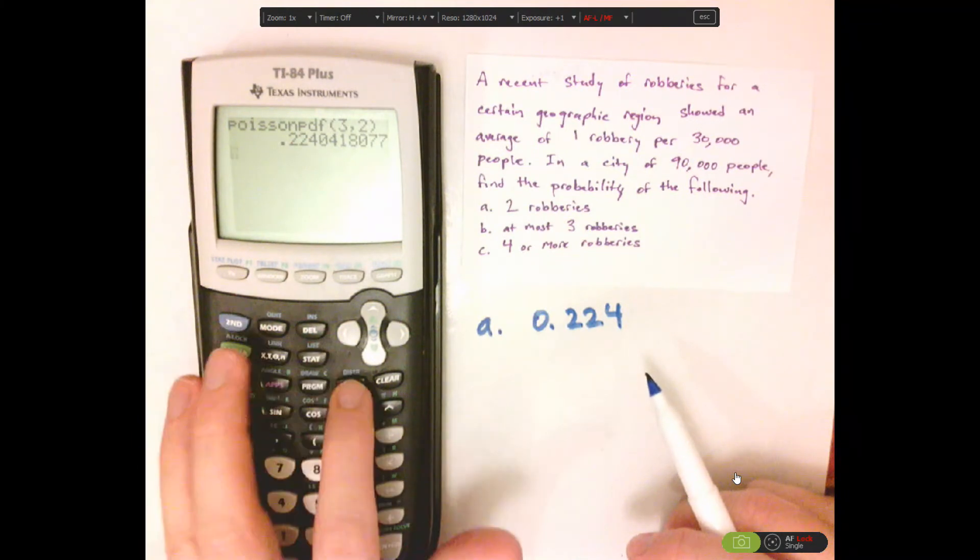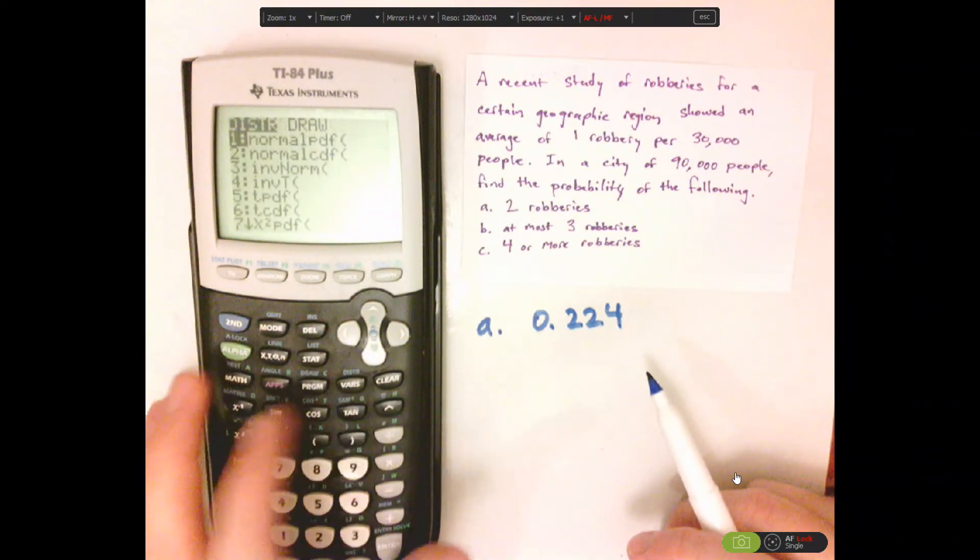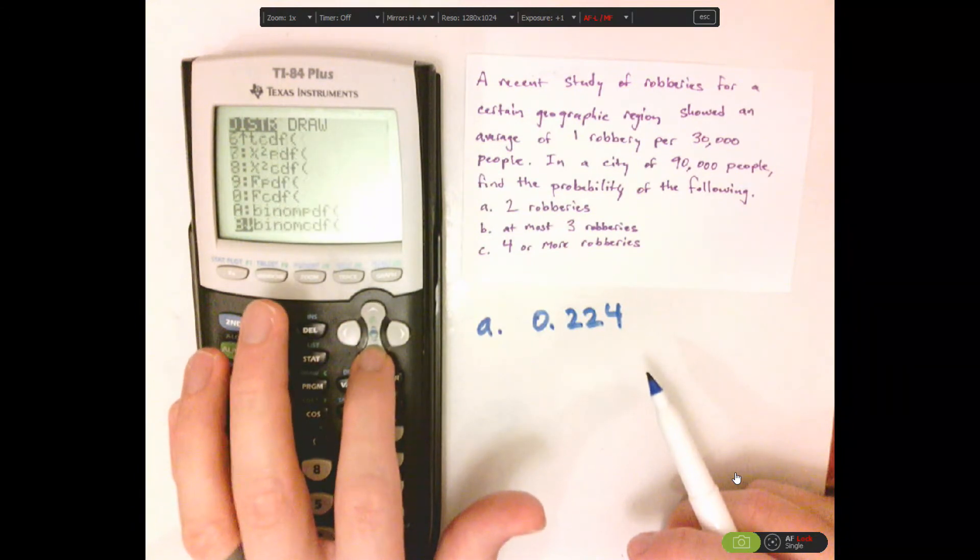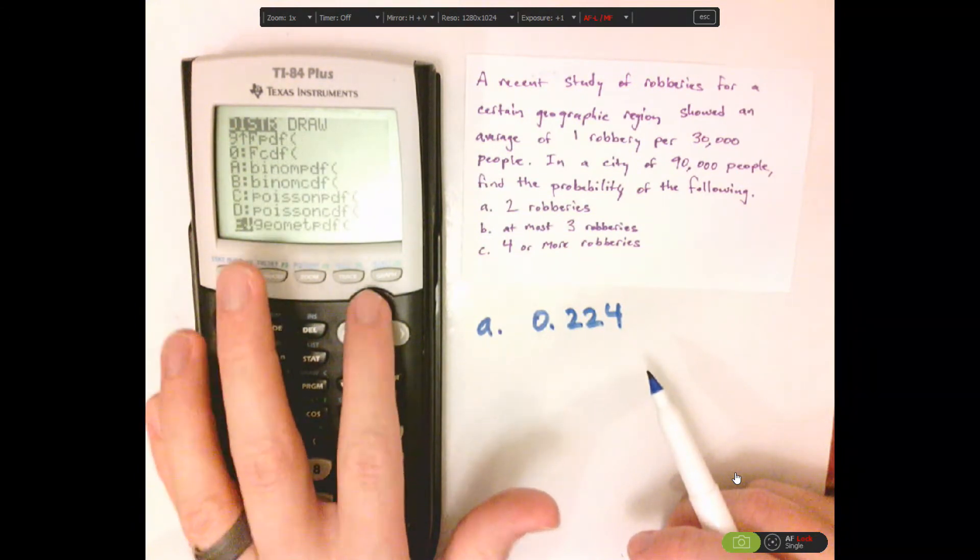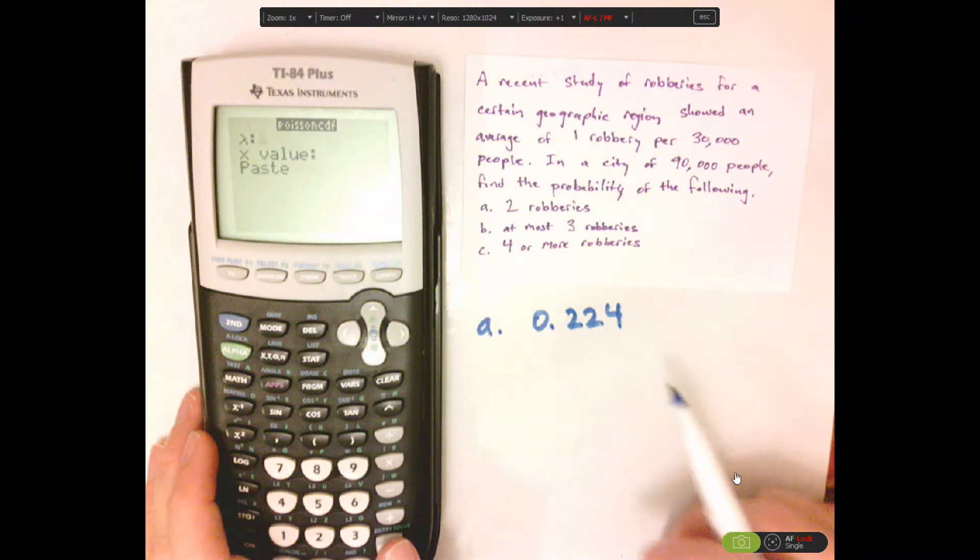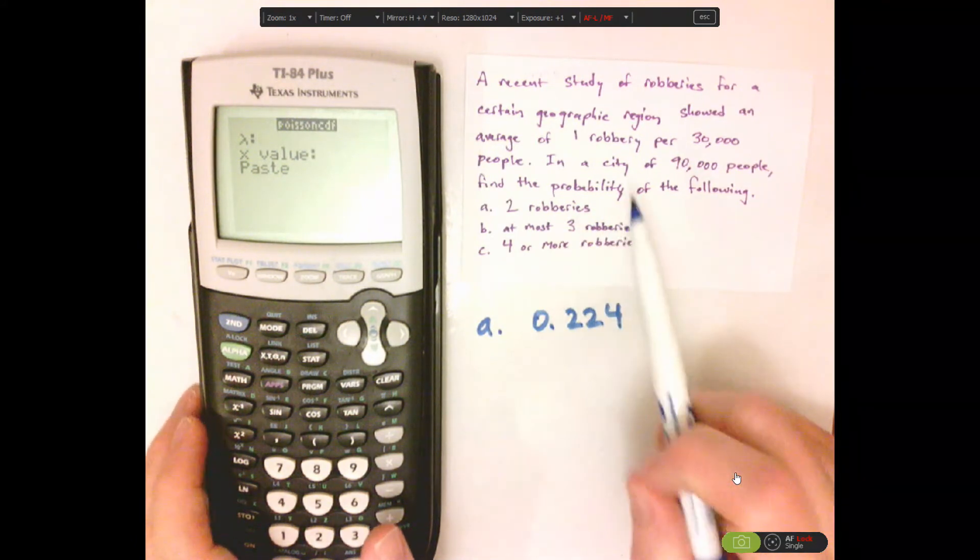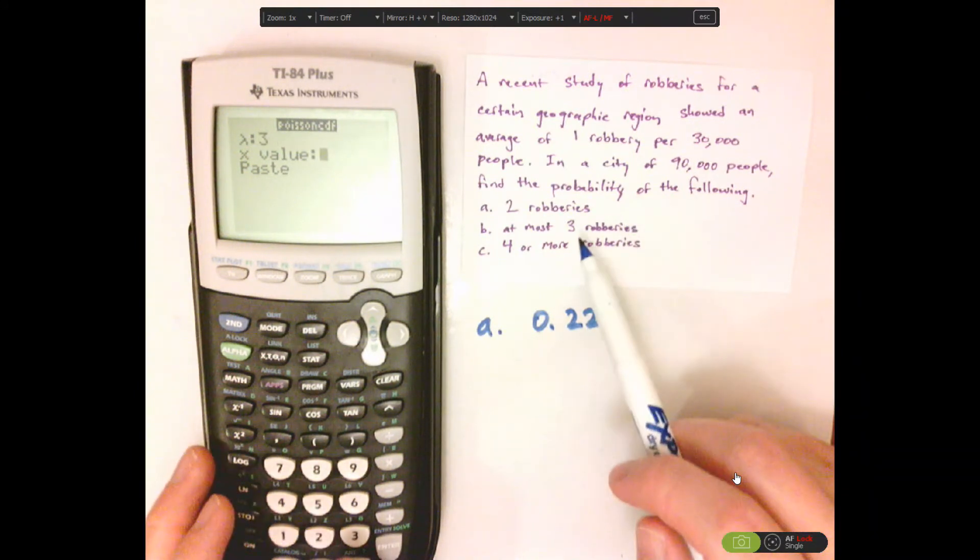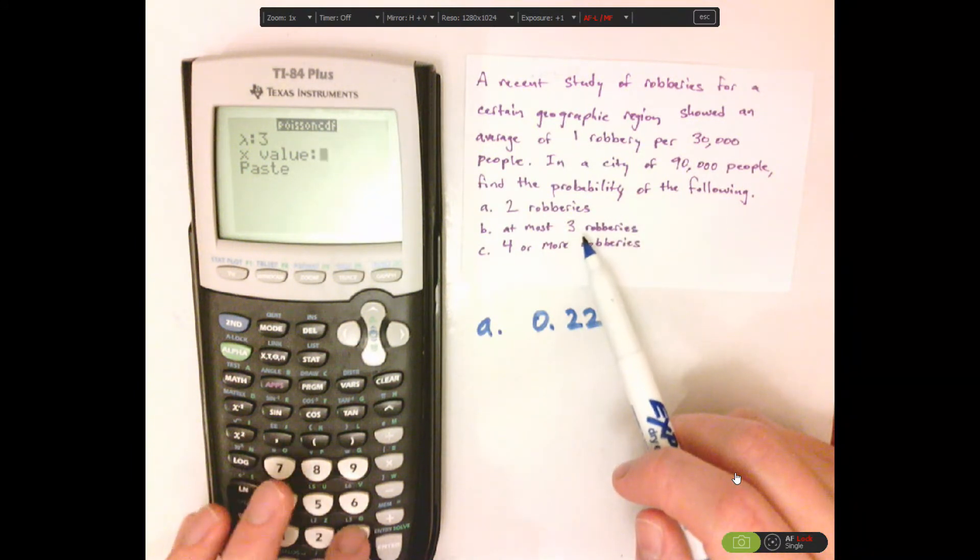So second, VARS to get distributions. Use the arrow keys. I like using the arrow keys. And then, Poisson CDF. We're going to select that. It's pretty much the same thing. So average is three. The value here is going to be three.